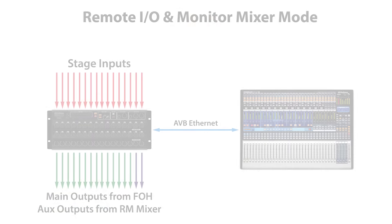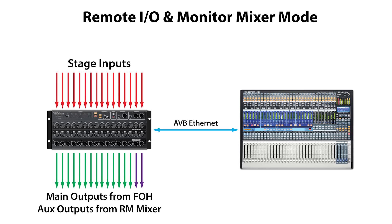The second mode is for remote I/O and monitor mixing. When set to this mode, the RM mixer will provide remote inputs to the AI console mixer at front of house, and the main mix from the front of house mixer will be sent to the RM mixer's main outputs. The mix outputs on the RM mixer provide dedicated aux outputs, allowing it to be used as a separate monitor mixer.